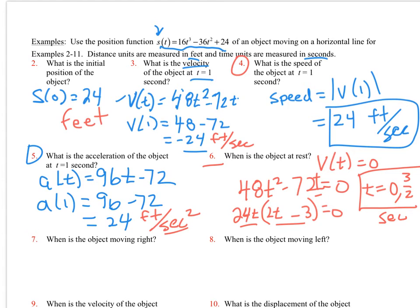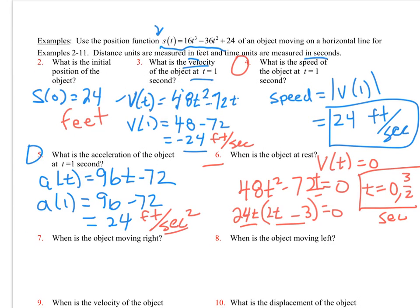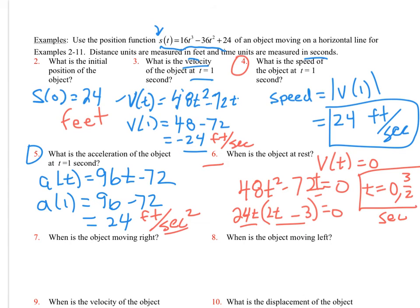What kind of units do I put on this? Well, time is in seconds. When is this object moving right? Well, we do know that if I set up a little number line for our velocity, I have zeros at zero and I have zeros at three halves. What happens is that the zeros that I got from number six back over here, that's going to split up where I'm positive and negative. That's what zeros do. So if I realize that this is a quadratic that's positive negative, it's going to go somewhere like this.